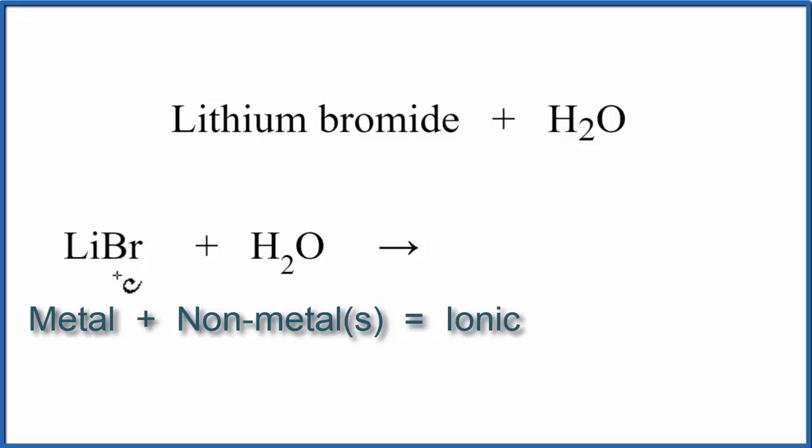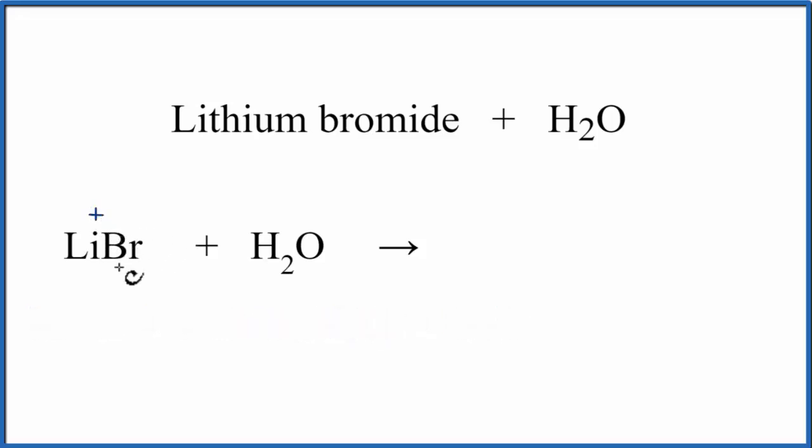So if we go to the periodic table and we look up lithium, that's in group 1, and it has a 1 plus charge. So write a plus up here. And then when you look bromine up, that's in group 17, sometimes called 7A, that has a minus charge.